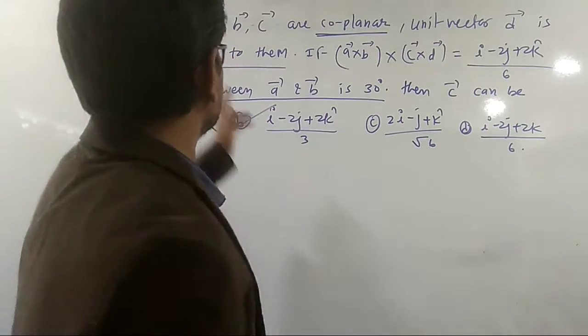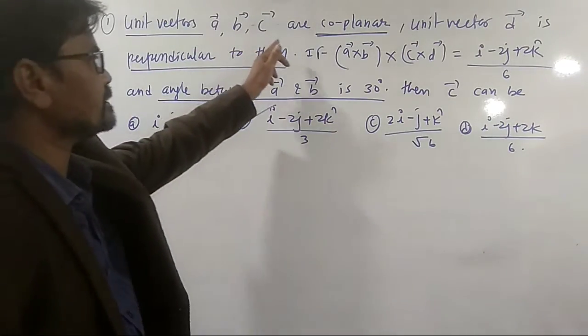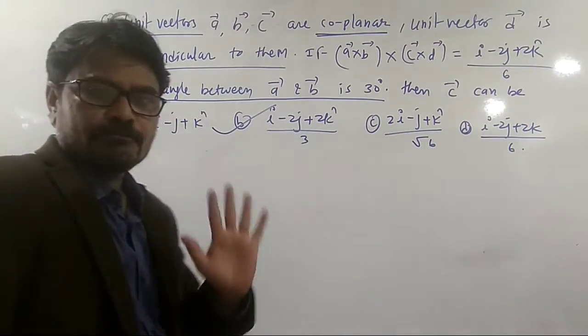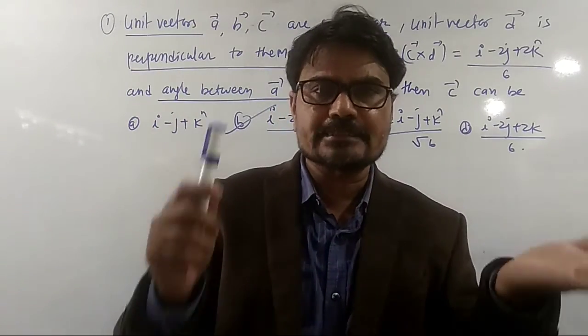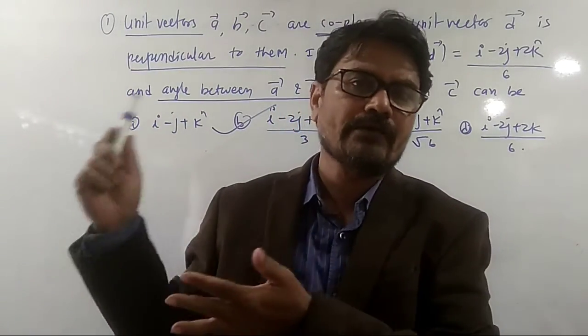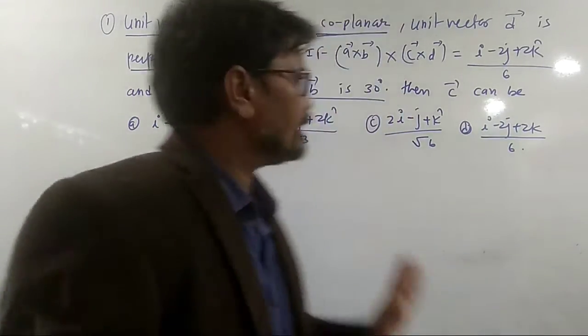The question is that the unit vectors A, B, C are coplanar. Each of the vectors has the magnitude 1, and they are coplanar.